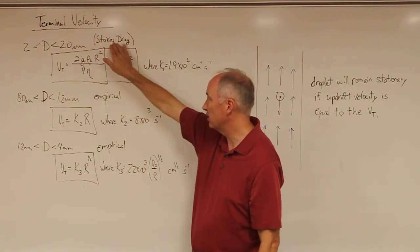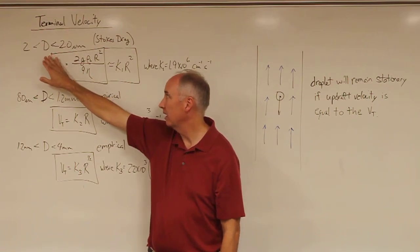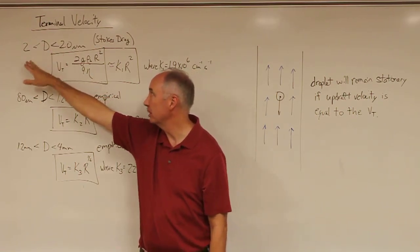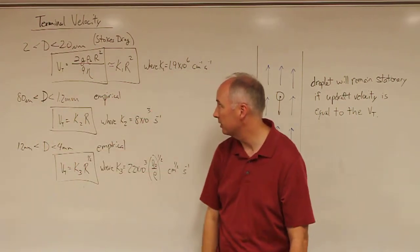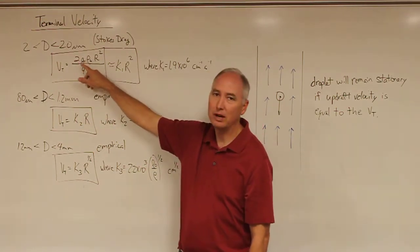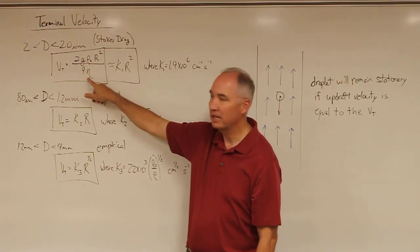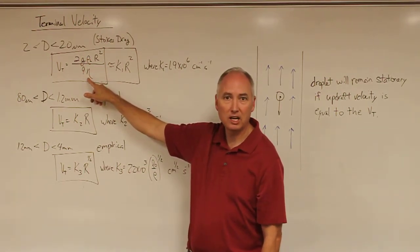For Stokes drag, which was strictly speaking correct and appropriate for diameters between 2 and 20 micrometers, we found that the terminal velocity was equal to 2 times gravity times the density of liquid water over 9 times eta, which is the dynamic viscosity of the air, times R squared.